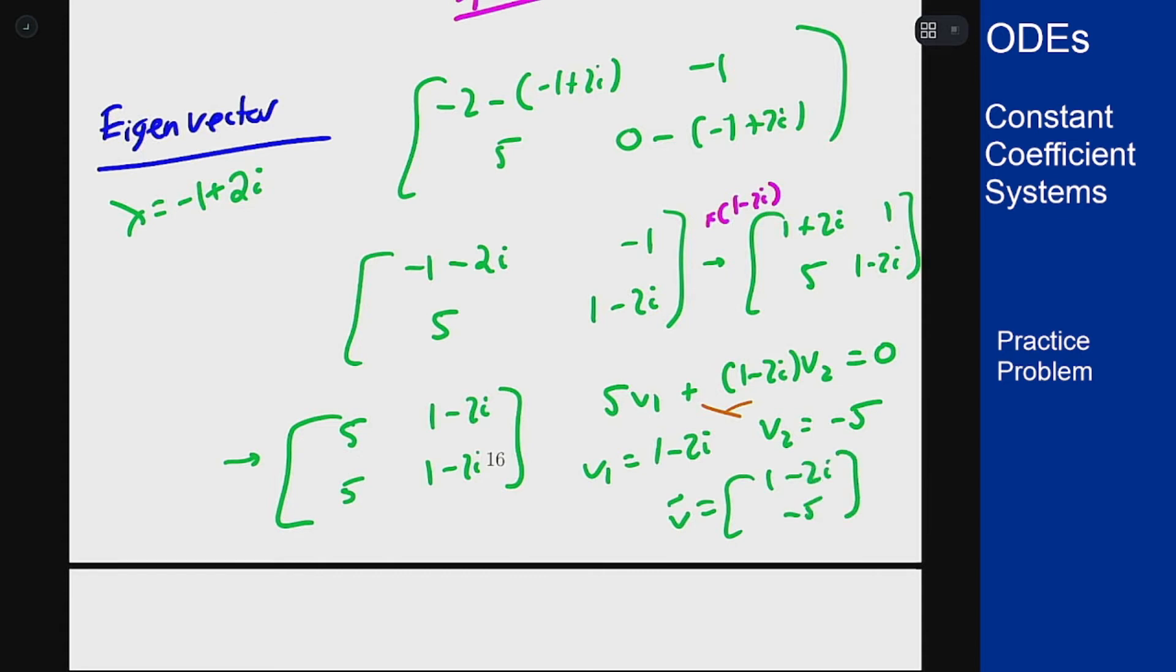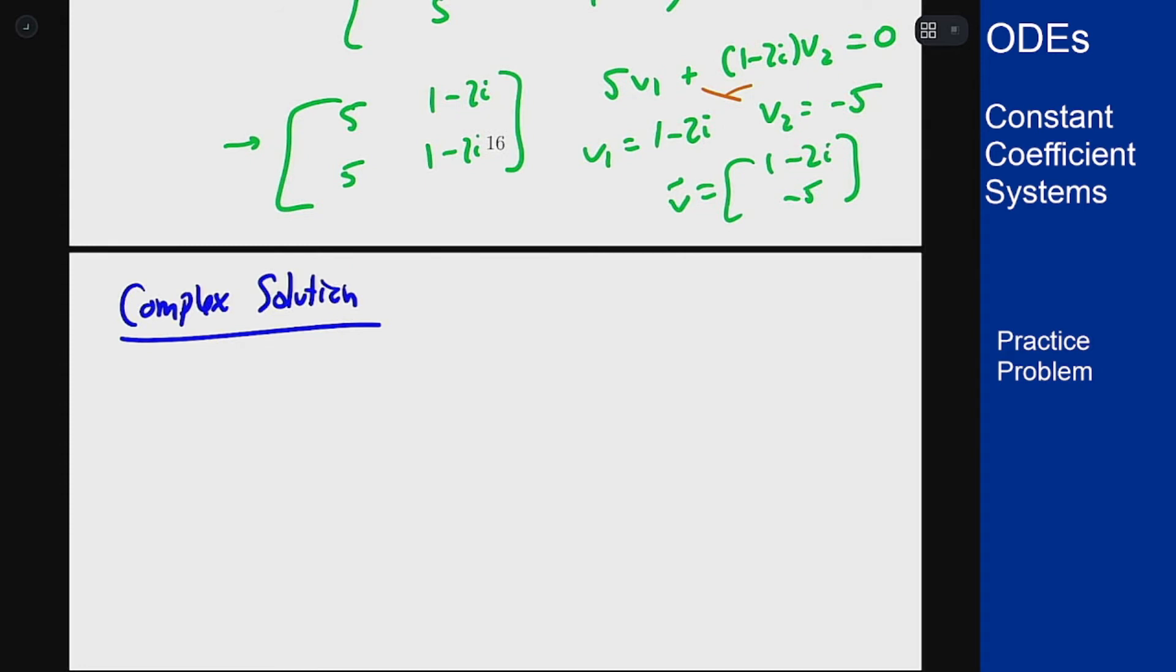This means we can write a complex solution as one minus two i minus five e to the minus one plus two i t. And now we have to apply Euler's formula. Let's put this into real and imaginary parts so I can get my two different solutions for solving the initial value problems or getting the general solution.